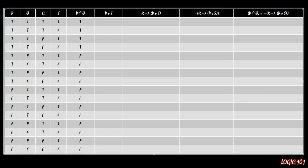Now we have P OR S — we're looking for where just P, or just S, or both are true. For at least the top half, this is always true because P is true. For the bottom half, it's only true when S is true, so we alternate: true, false, true, false, true, false, true, false — that's just connecting over to the S column.